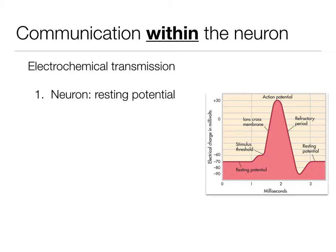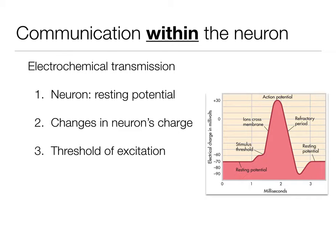Next we have depolarization, which is going to change that neuron's charge. We then have repolarization, and this is all happening within that action potential. If we reach that threshold of excitation, we will have an action potential. Action potentials are all or none — you either reach that threshold or you don't. If you don't reach that threshold, the neuron will not fire. You're not going to get a half fire; it either fires all the way or it doesn't.